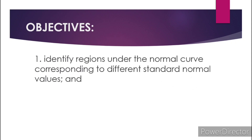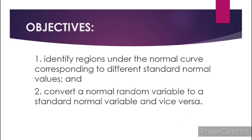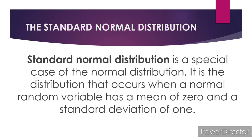First, we will identify regions under the normal curve corresponding to different standard normal values. And lastly, we are going to convert a normal random variable to a standard normal variable and vice versa. When we say standard normal distribution, it is a special case of the normal distribution — the distribution that occurs when a normal random variable has a mean of zero and a standard deviation of one.